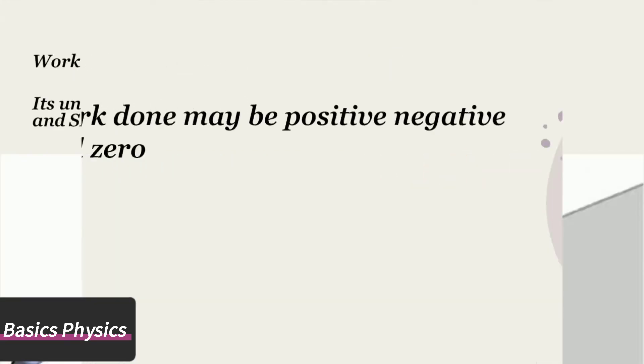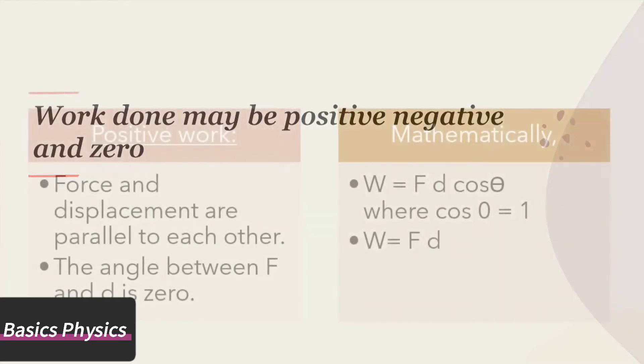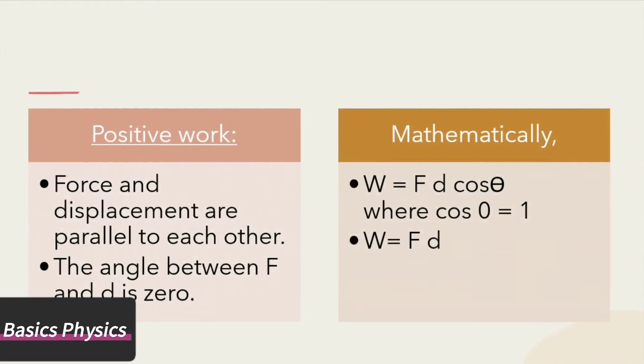Work done may be positive, negative, and zero. Work done is said to be positive when force and displacement are parallel to each other. The angle between force and displacement is zero. Work done is maximum when force and displacement are parallel to each other.